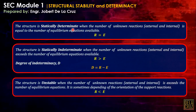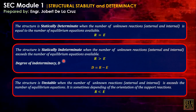A structure is statically determinate when the number of unknown reactions, external and internal, is equal to the number of equilibrium equations available. This is expressed as R equals E. A structure is statically indeterminate when the number of unknown reactions exceeds the number of equilibrium equations available, so R is greater than E.